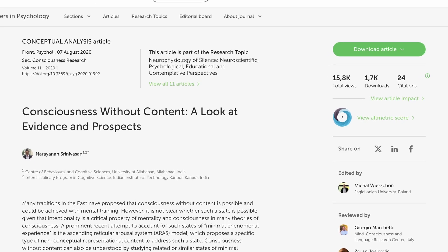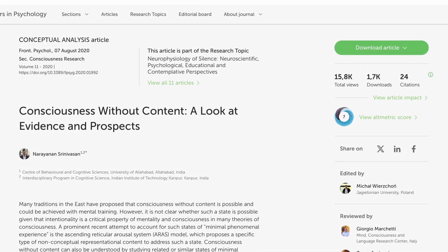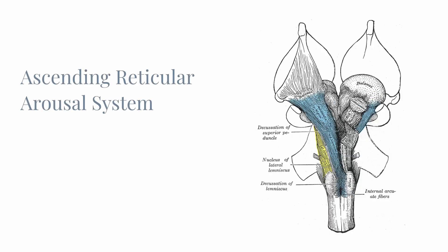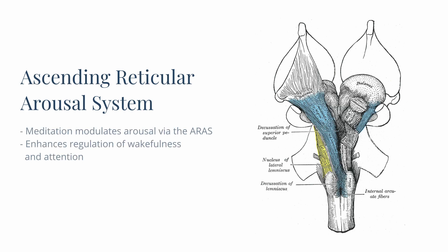So this is a little bit theoretical, but we can see how these three groups of self relate to brain networks, and there's no one network that we could call the self.